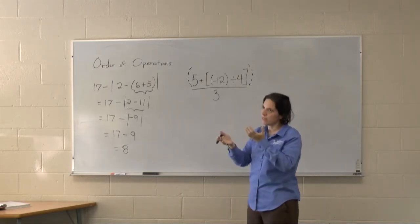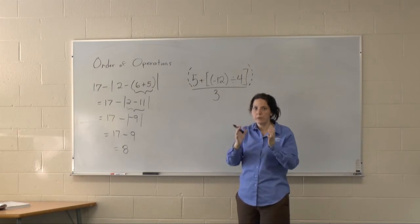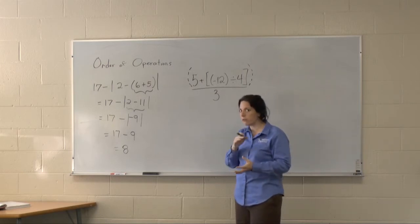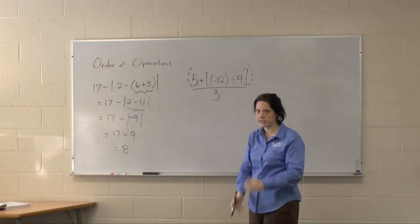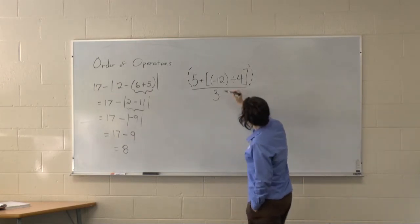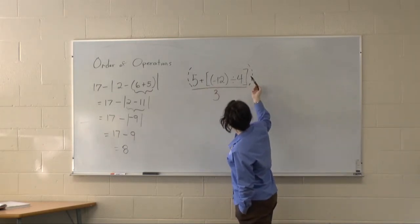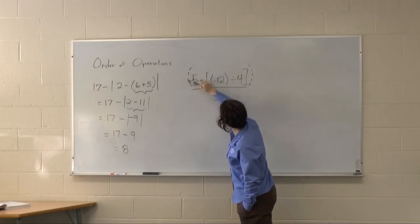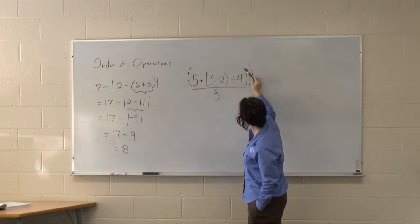That way, you're going to get them to evaluate what's in the numerator and the denominator separately first, before trying to divide. And in the numerator, I have multiple parentheticals. I have this one, and then I have a set of brackets.